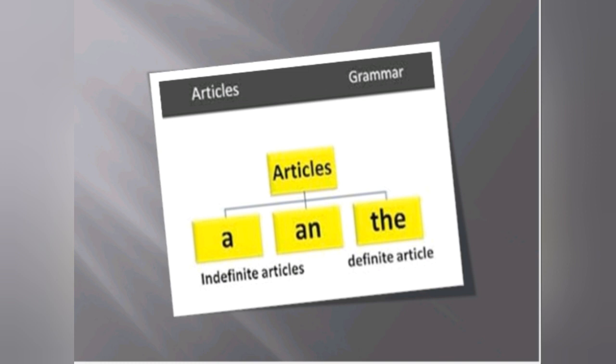The indefinite articles a and an are used before a noun when its identity is not known. The definite article is used before a noun when the identity of the noun is known to us. In this video we will discuss the indefinite articles a and an.